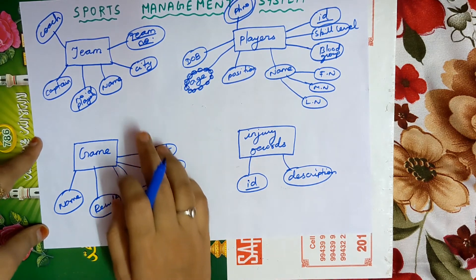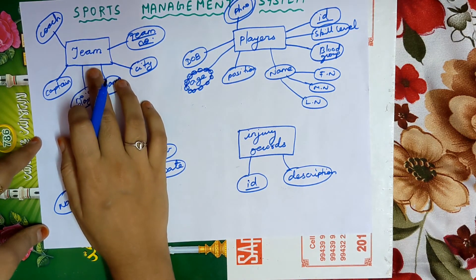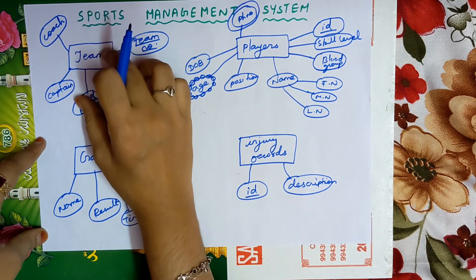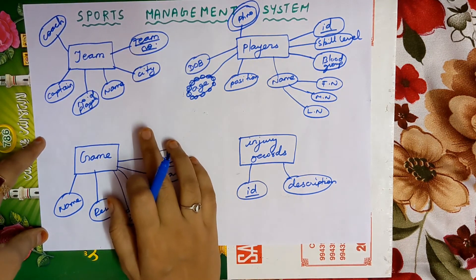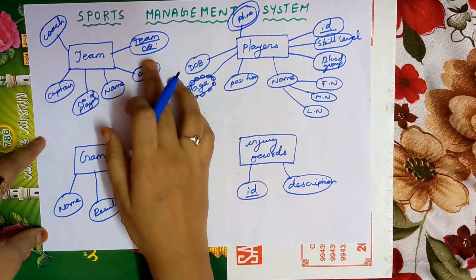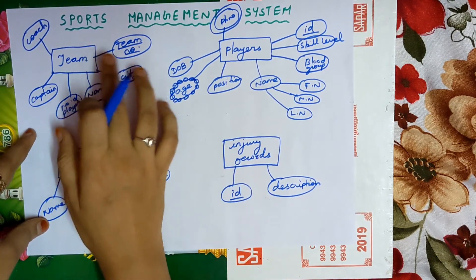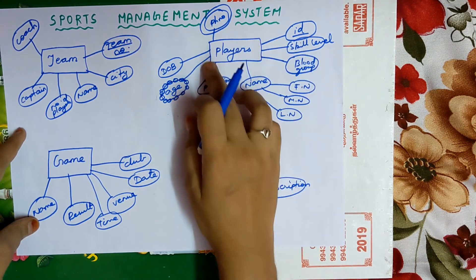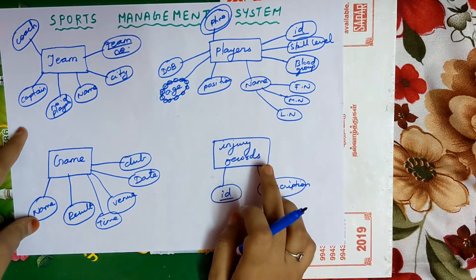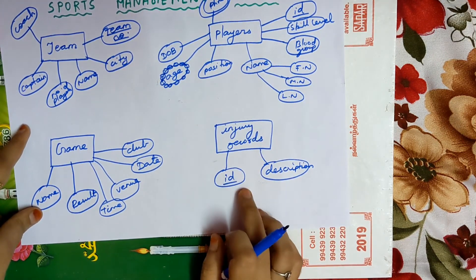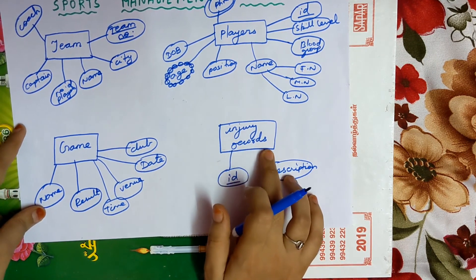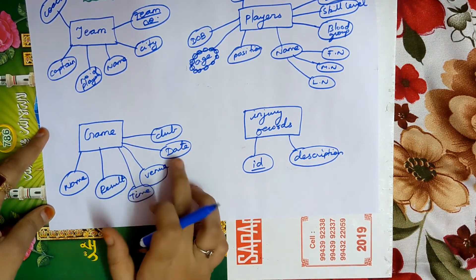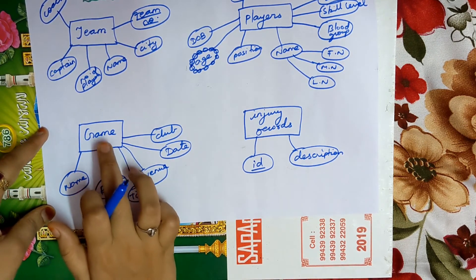Now we check whether every entity has a primary key. Team has team number as a primary key, so team is a strong entity set. Players have a player ID as a primary key, so player is also a strong entity set. Injury records has an ID as a primary key, so it is also a strong entity set. Game does not have any primary key attribute, therefore game is a weak entity set.